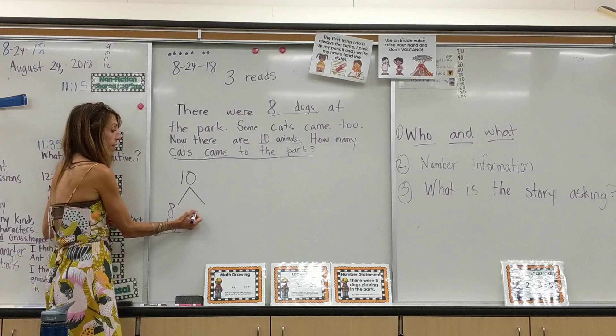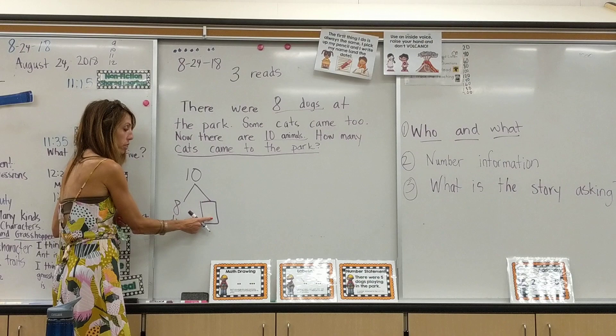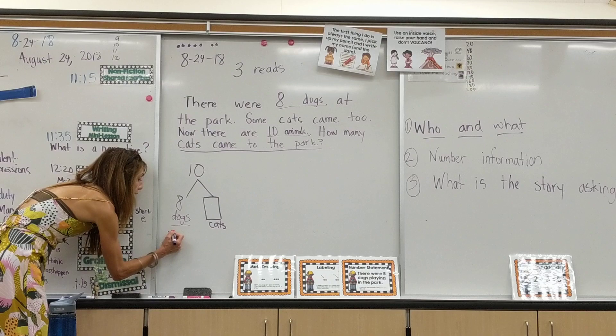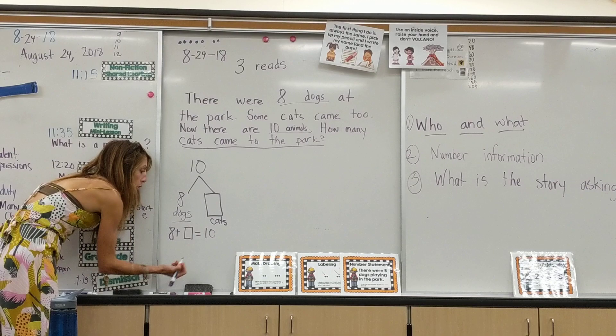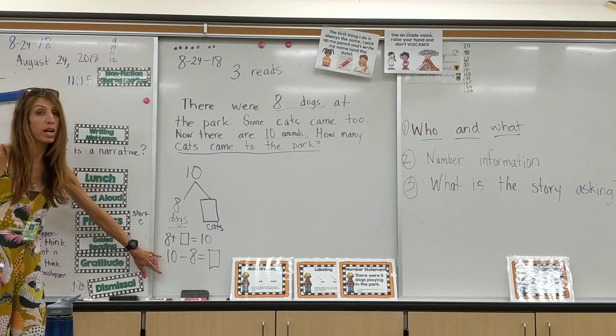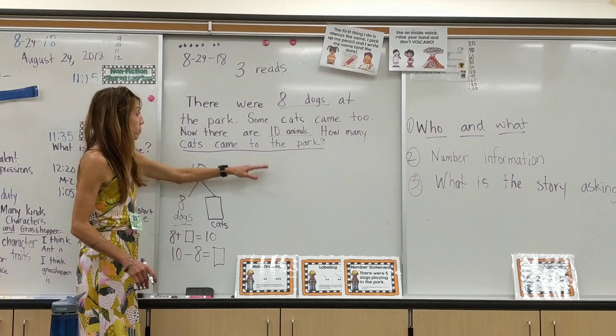What we teach them is that for whatever they're missing — whether it's the whole or a part — they box it. So here they can see they're trying to figure out how many cats. If they want to put this in equation form, they can say eight dogs plus the missing cats equals ten animals, or they could say ten animals minus eight dogs equals how many cats. It doesn't matter if they're solving with addition or subtraction — they'll get the same result.